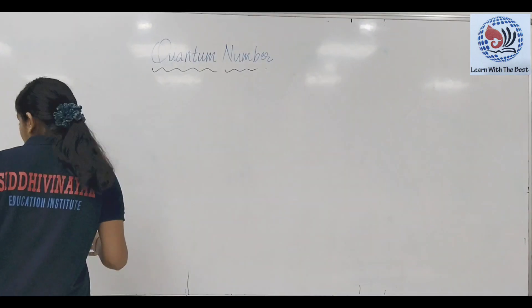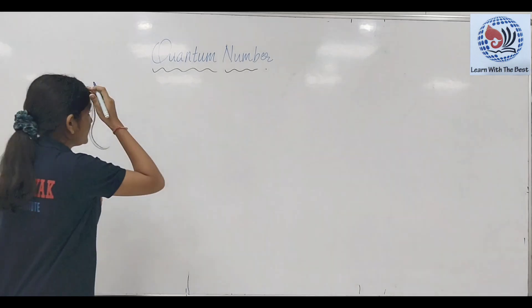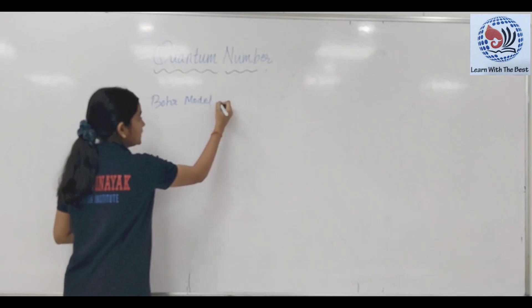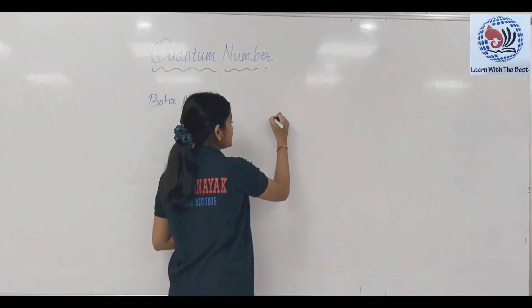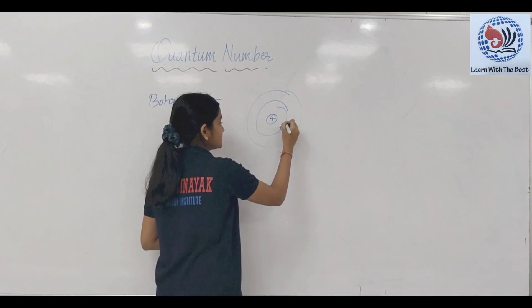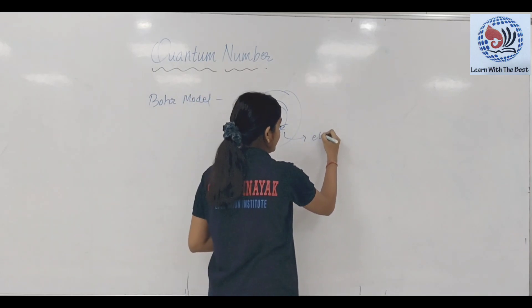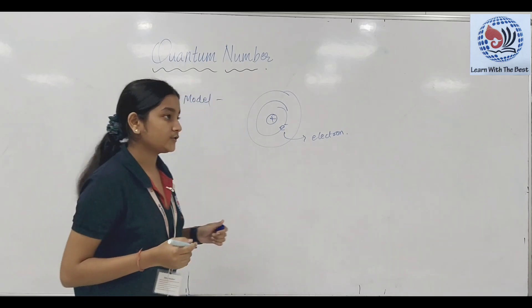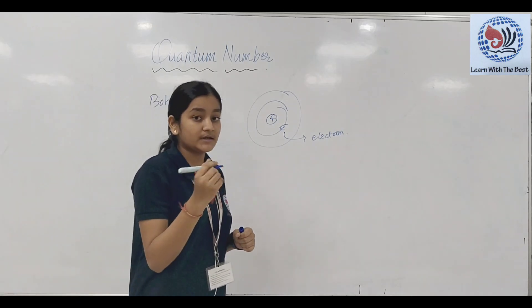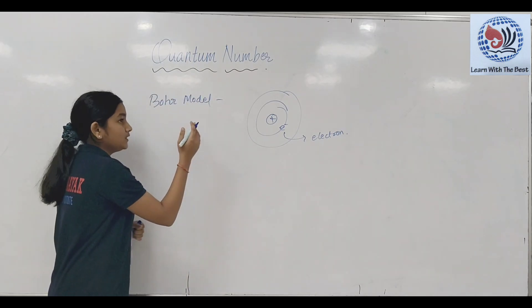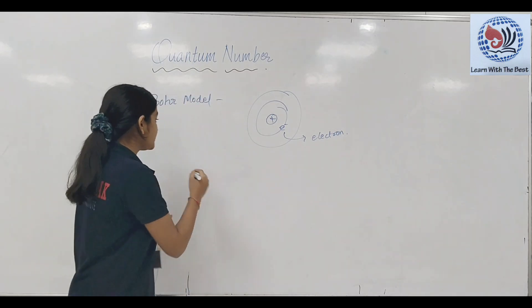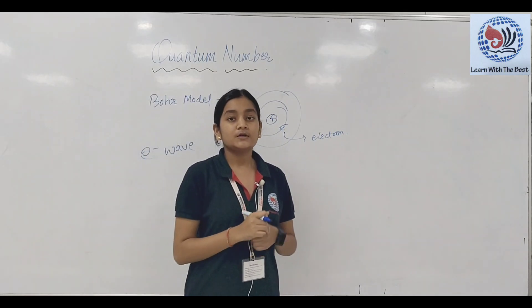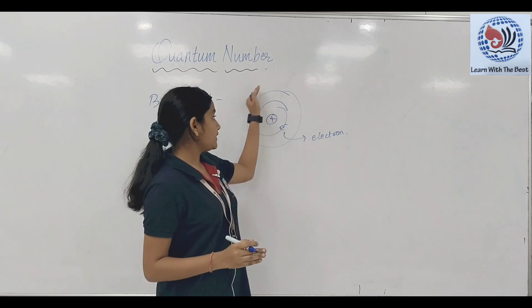What is Quantum Number, and how did it come? Bohr's model states that an atom within a nucleus has orbits around which electrons revolve. But in the 11th chapter of our atomic structure, it was de Broglie's model and Heisenberg's model. Heisenberg's model has proved that the electron is a wave. So, if the electron is a wave, it is not compulsory that it is in an orbit.